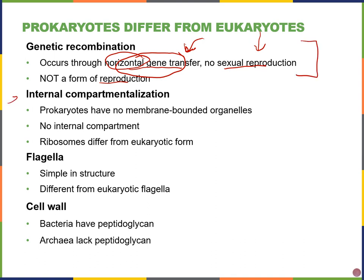Prokaryotes do not have membrane-bound organelles — so they don't have things like mitochondria or chloroplasts. But they do have ribosomes, since ribosomes are not membrane-bound. There's no internal compartmentalization. Those ribosomes are different from eukaryotic ribosomes — they're smaller and made of different proteins. Some prokaryotes have flagella, which are very simple in structure compared to eukaryotic flagella, and also made of different proteins.